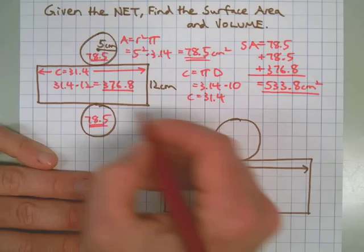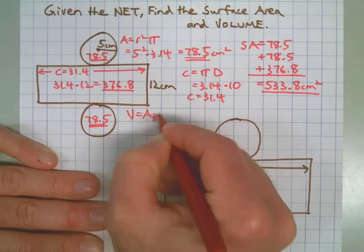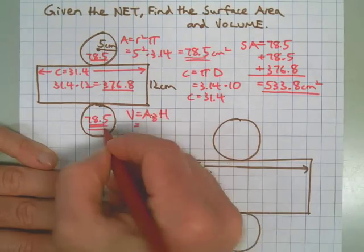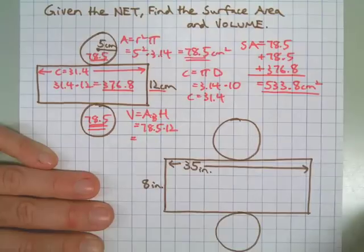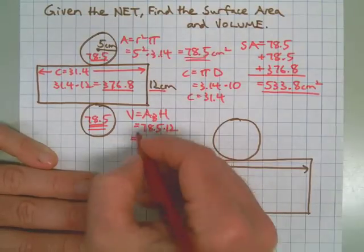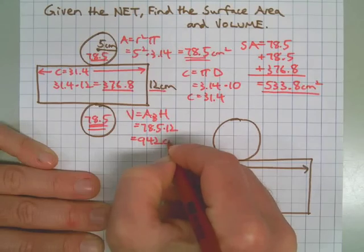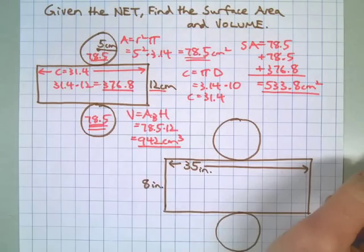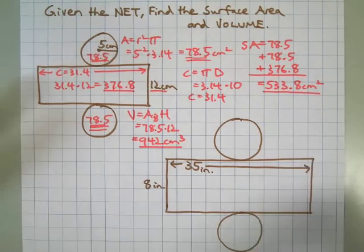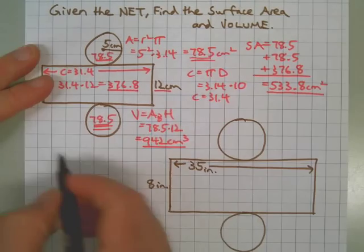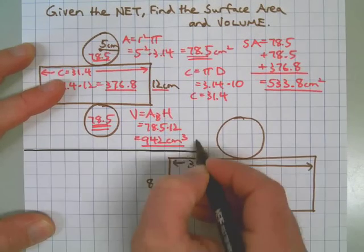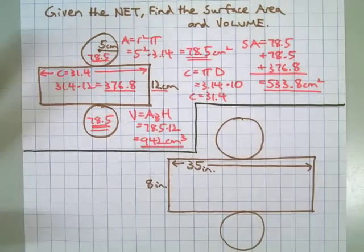Now let's do the volume. Volume equals area of the base times height. There's the area of the base — 78.5 — and there's the height. The units will have a little superscript 3 because this is a three-dimensional object. The volume is 942 cubic centimeters. Hopefully our work matches. If you made any mistakes, hopefully you understand what you did and you'll be able to fix them next time.